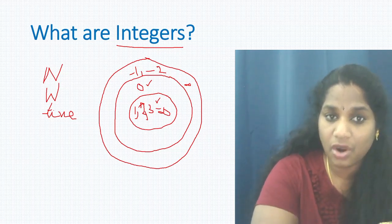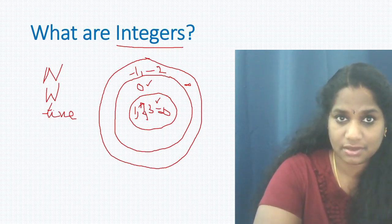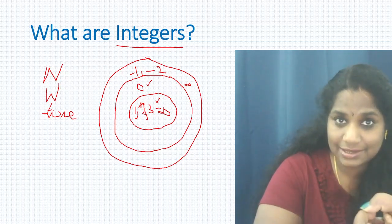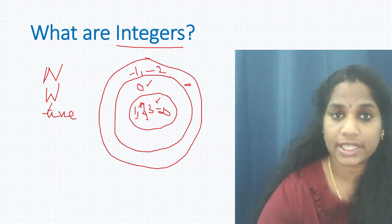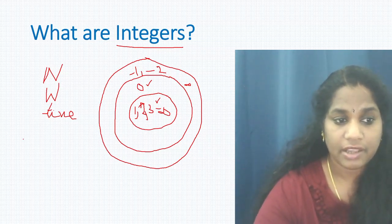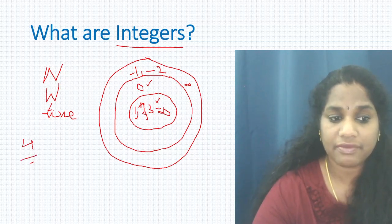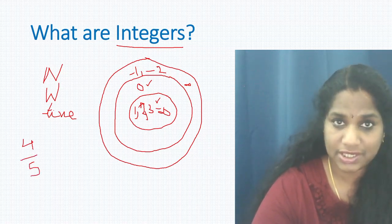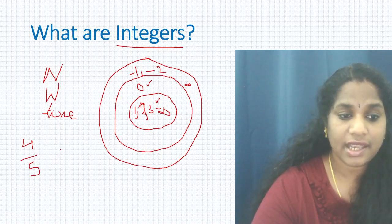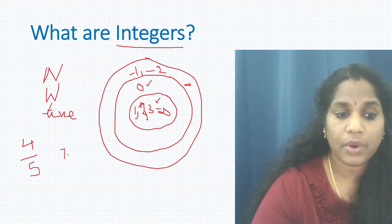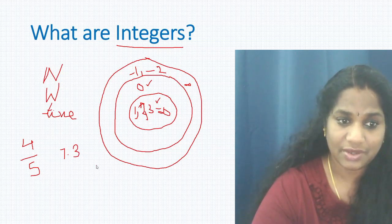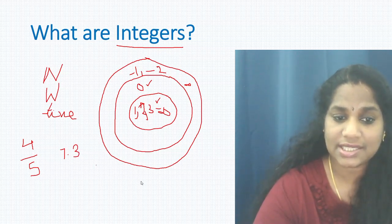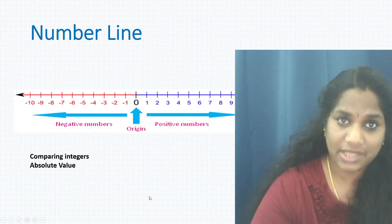So integers consist of natural numbers, whole numbers, and all negative numbers. What does integer NOT consist of? All fractions and decimals are not part of integers. For example, 4/5 is not an integer, and 7.3 is not an integer.